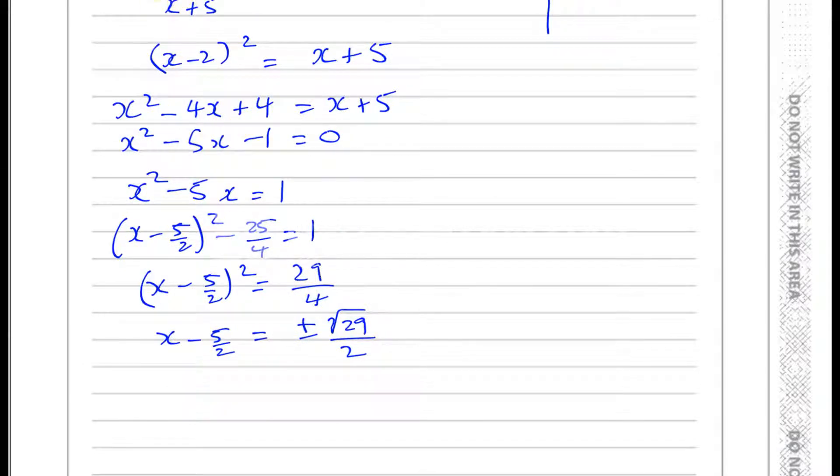So we have here x equals 5 over 2. We'll have (5 plus root 29) over 2, or (5 minus root 29) over 2.